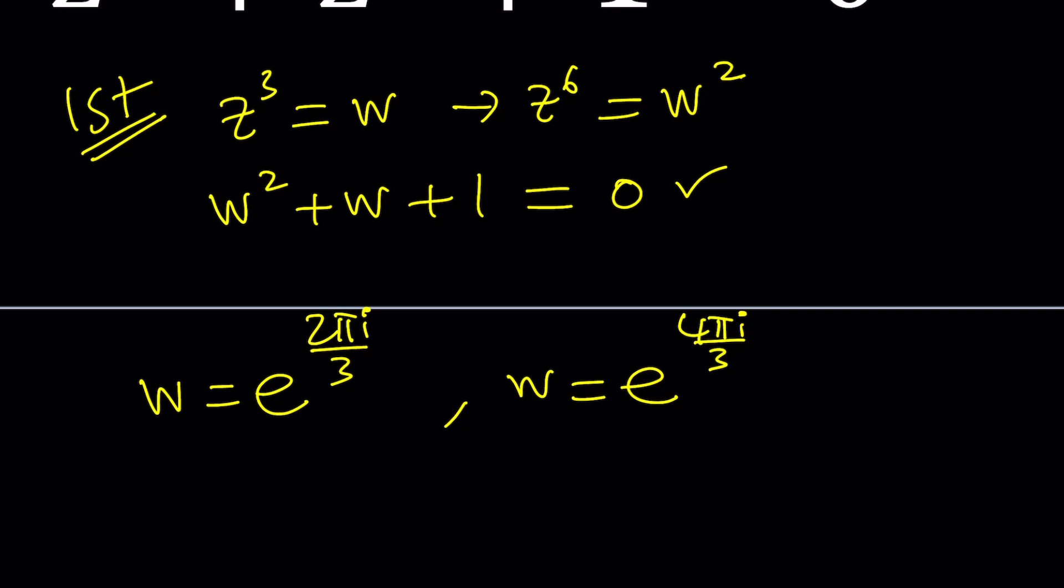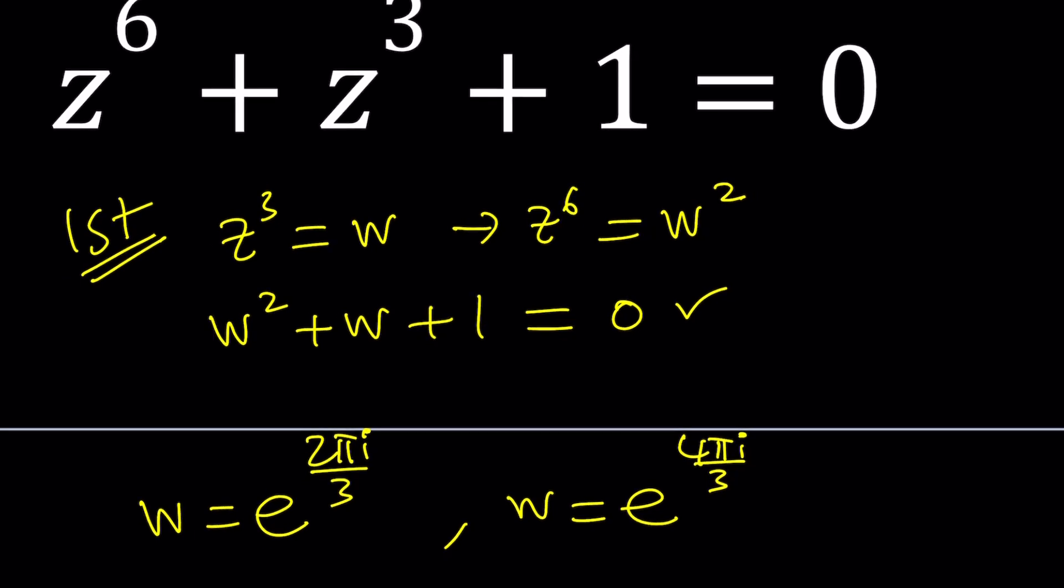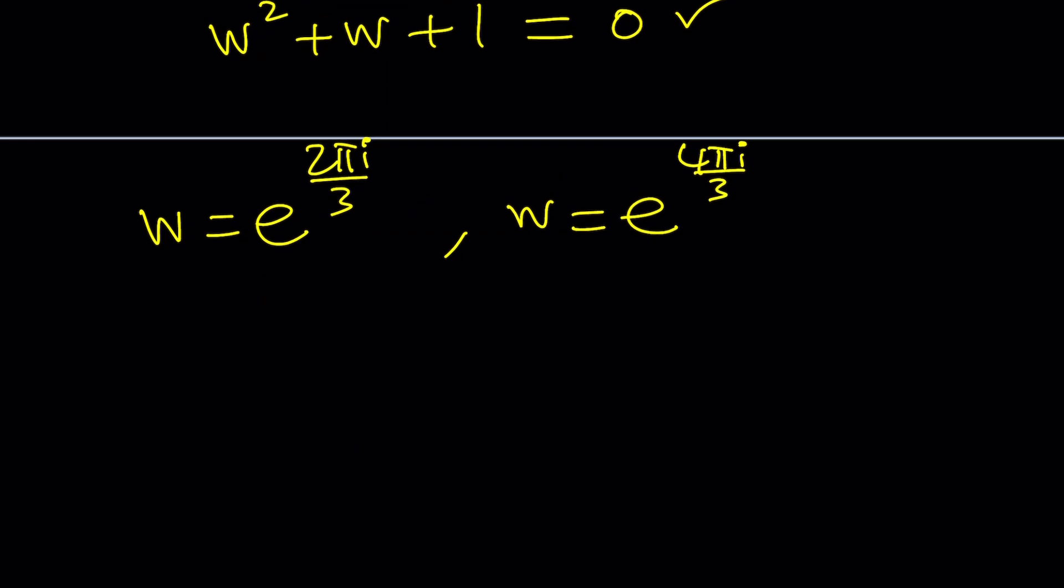Since we know what w is, can't we find z from there because z cubed is equal to w, so they're related. So go ahead and use this relationship, but always remember if you set something equal to z cubed, then you're going to find cube roots, but there are three cube roots of a complex number. And to find them, here's a shortcut. First of all, cut the angle in thirds first, it's going to be the first one. So divide by three, that's going to give you two pi i over nine.